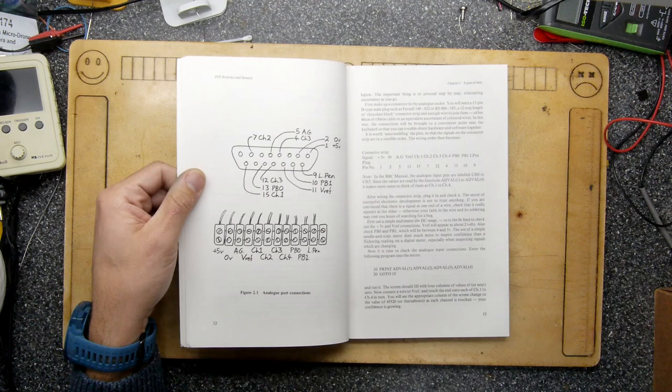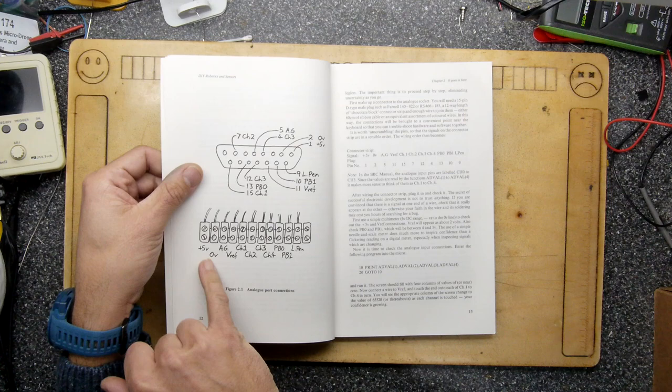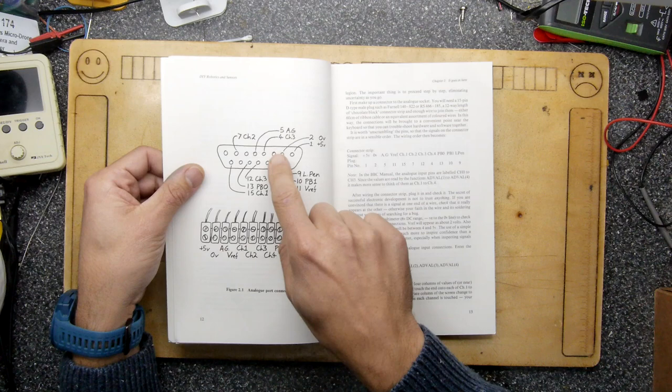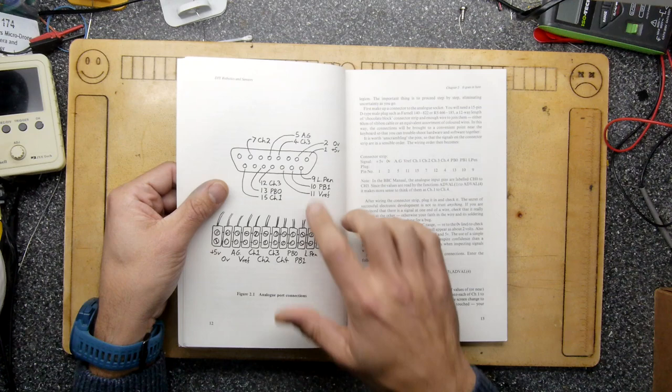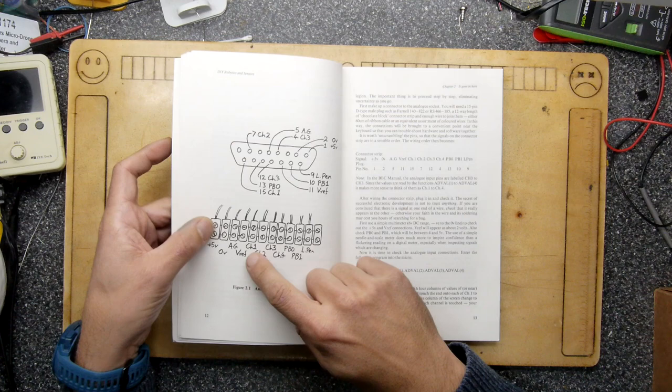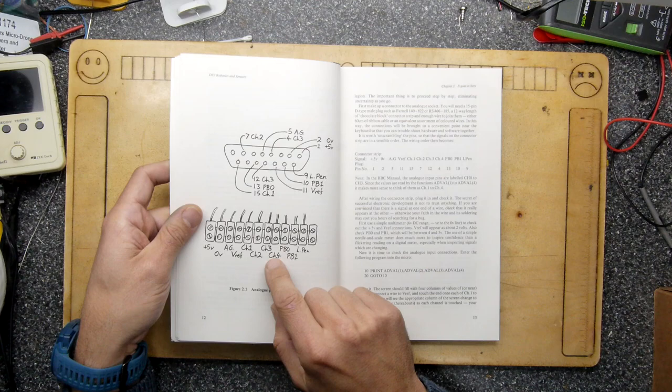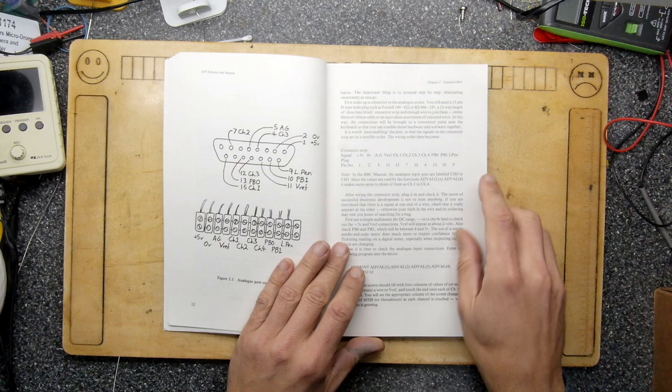The BBC of course like many computers of the day had an analog port on the back and this is showing you all of that useful pinout. Let's see what we've got: five volts and zero volts, analog ground probably, voltage reference, and then one two three four channels of the digital input as far as I'm aware. PB0 and PB1 and L pen. I'll have to look through here to see what those actually mean. Not particularly well described, it doesn't matter, wire it all up, we're going to use it later.